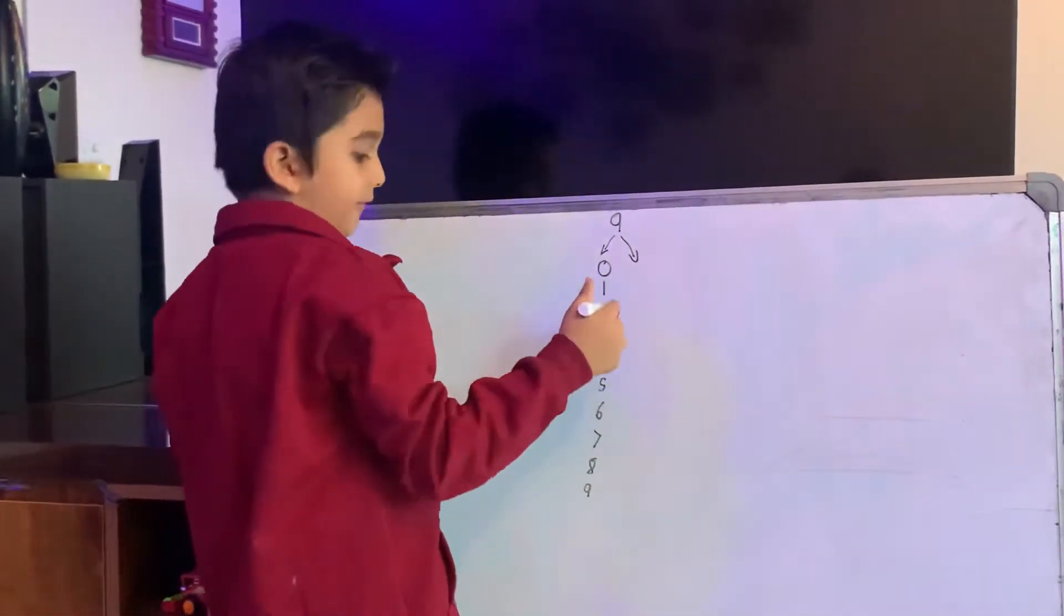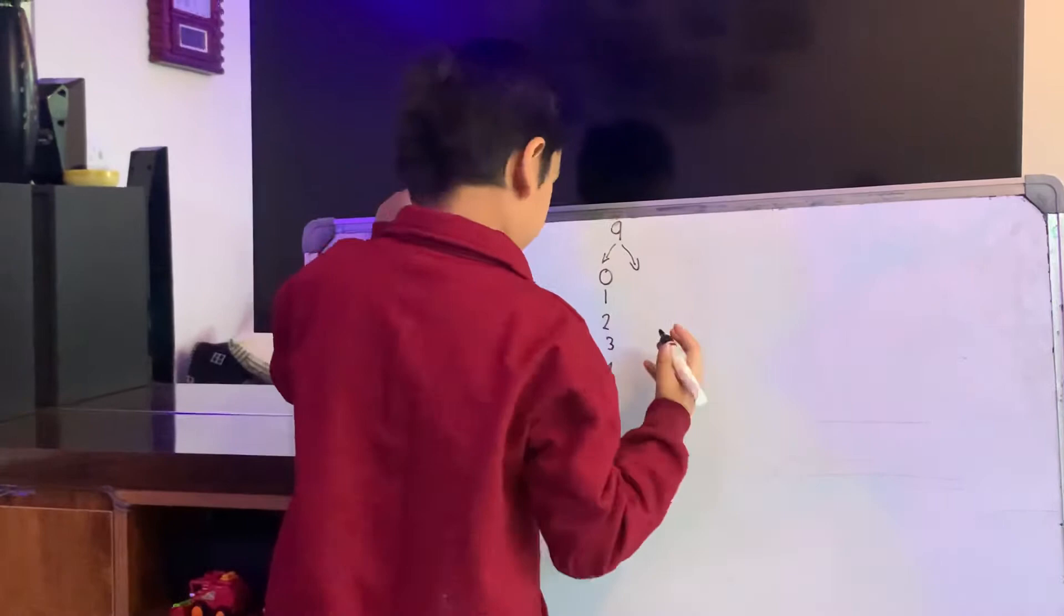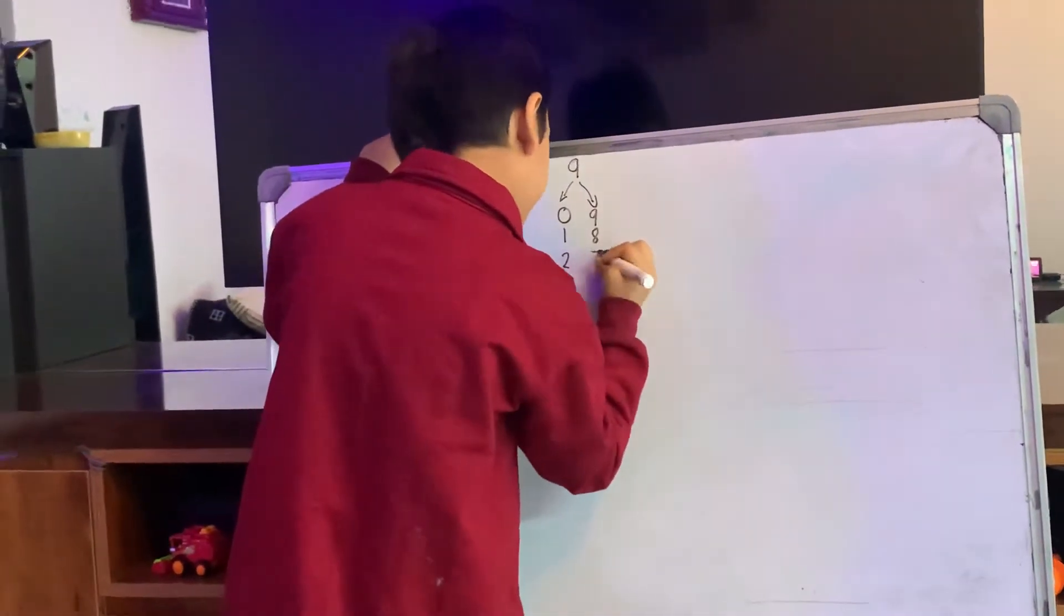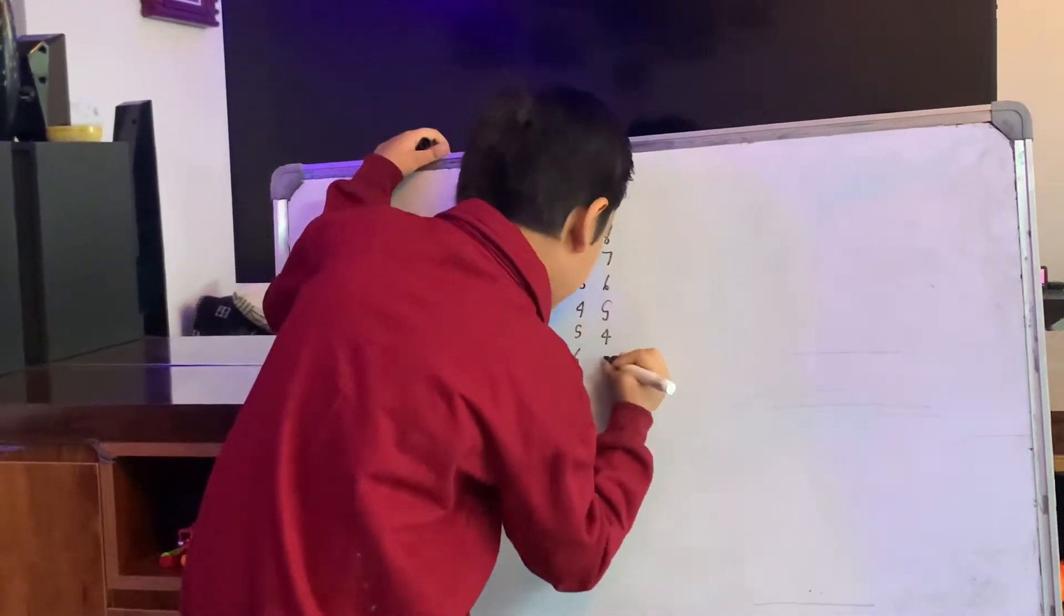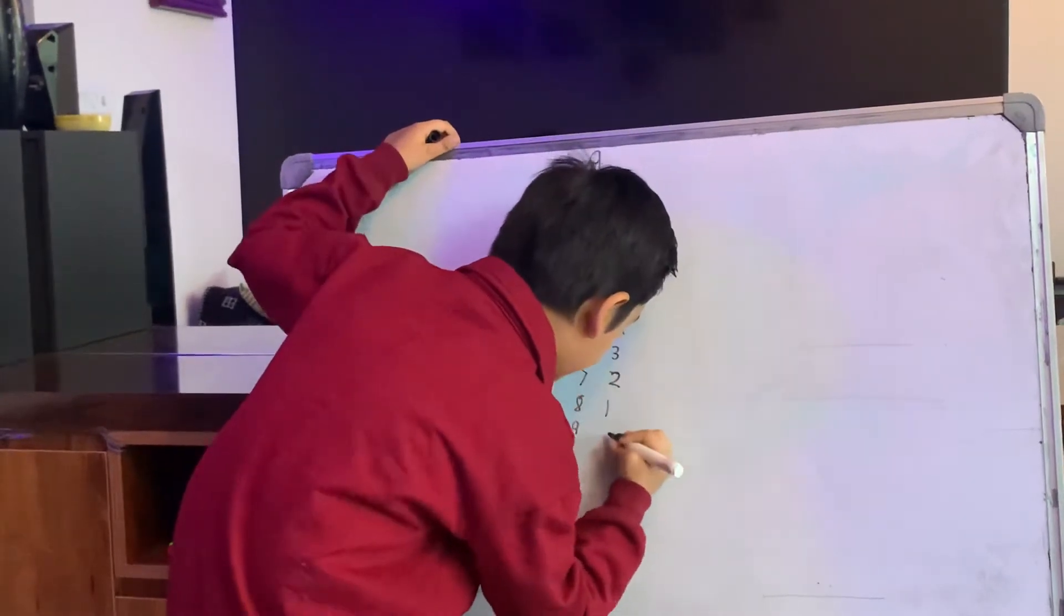And here we are going to write from 9 to 0. Let's draw. 9, 8, 7, 6, 5, 4, 3, 2, 1, 0.